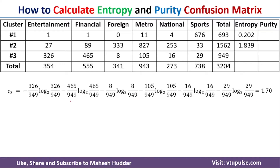Similarly, we calculate entropy for the third cluster. The denominator is 949. The numerators are 326 for the first class, 465 for the second, 8 for the third, 105 for the fourth, and so on. Once you solve this equation, you get 1.70 as the entropy for Cluster 3.